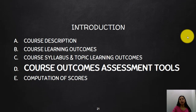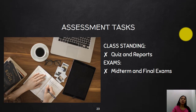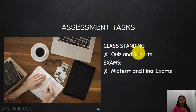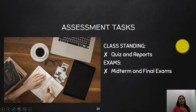Next up is your course outcomes assessment tools — the tools we use to calculate your scores or grades. Our tools consist of two: your class standing, which comprises your quizzes and your experimental reports; and your exams, wherein you have a midterm exam and a final exam.